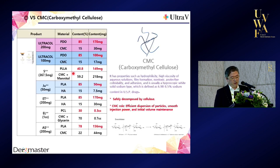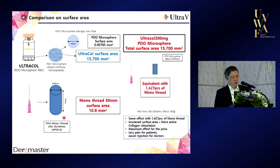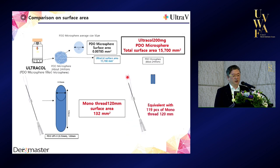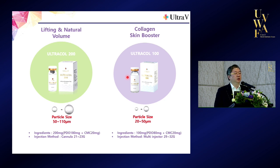These are some interesting studies on collagen stimulation. A mono thread 3850 has a surface area for collagen stimulation of 10.9 micrometers. UltraCol 200 has two billion micro spheres — we calculate the surface area and get 15,700, which is equivalent to 1,400 pieces of mono thread in collagen stimulation surface area. Some Korean clinics advertise this as '1,400 thread equivalent collagen stimulation.'